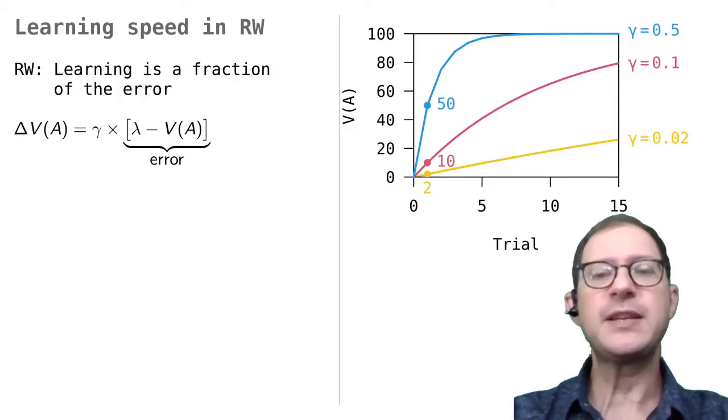In all cases, V starts from 0, and the target lambda value is 100, so the initial error is also 100. When gamma is 0.5, the first change in V is 0.5 times 100, that is 50. So the associative strength jumps from 0 to 50 in just one experience. On the other hand, when gamma is 0.1, the first jump is only 10, and when gamma is 0.02, it is only 2.